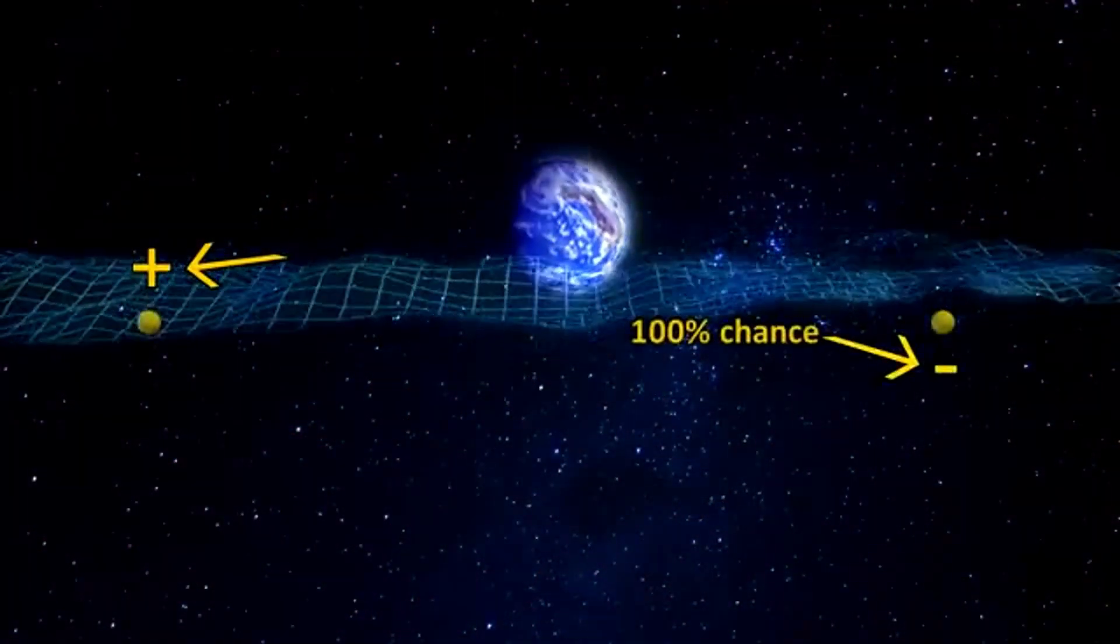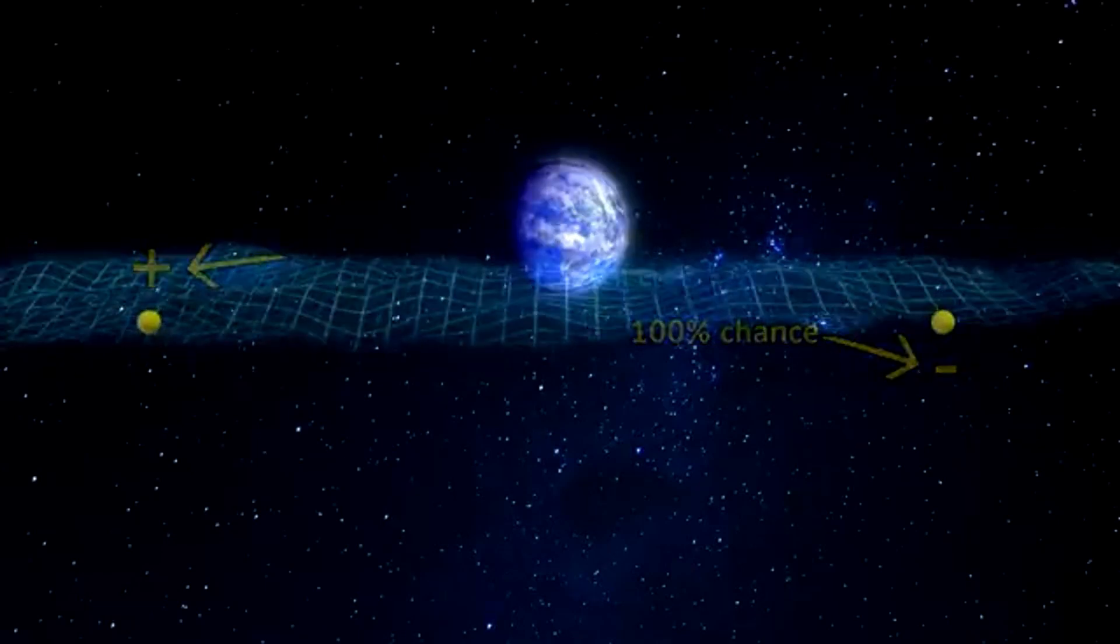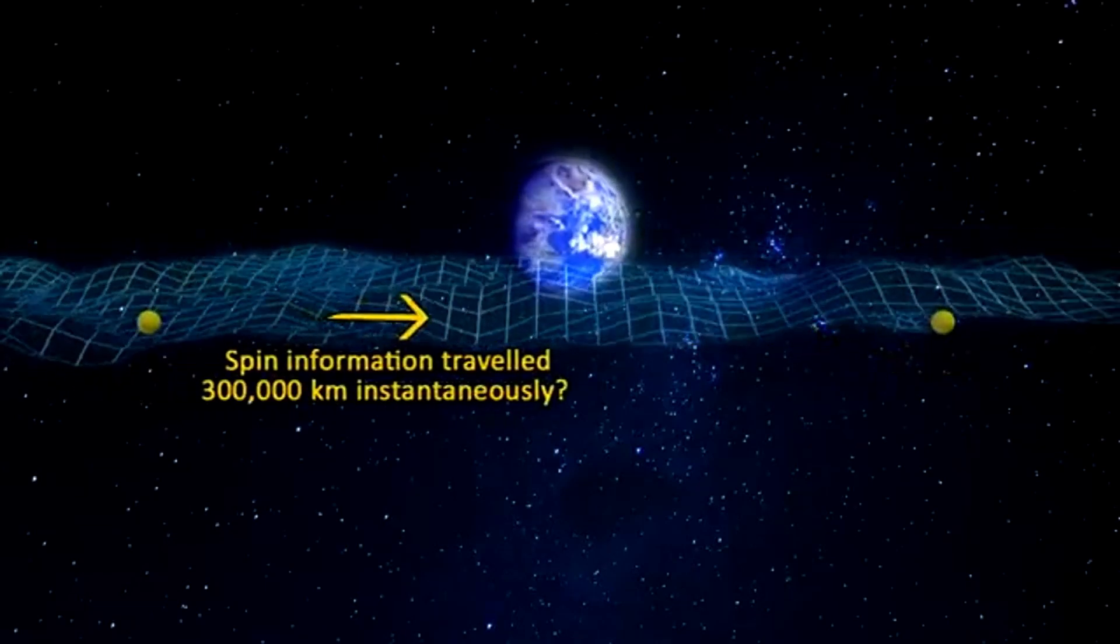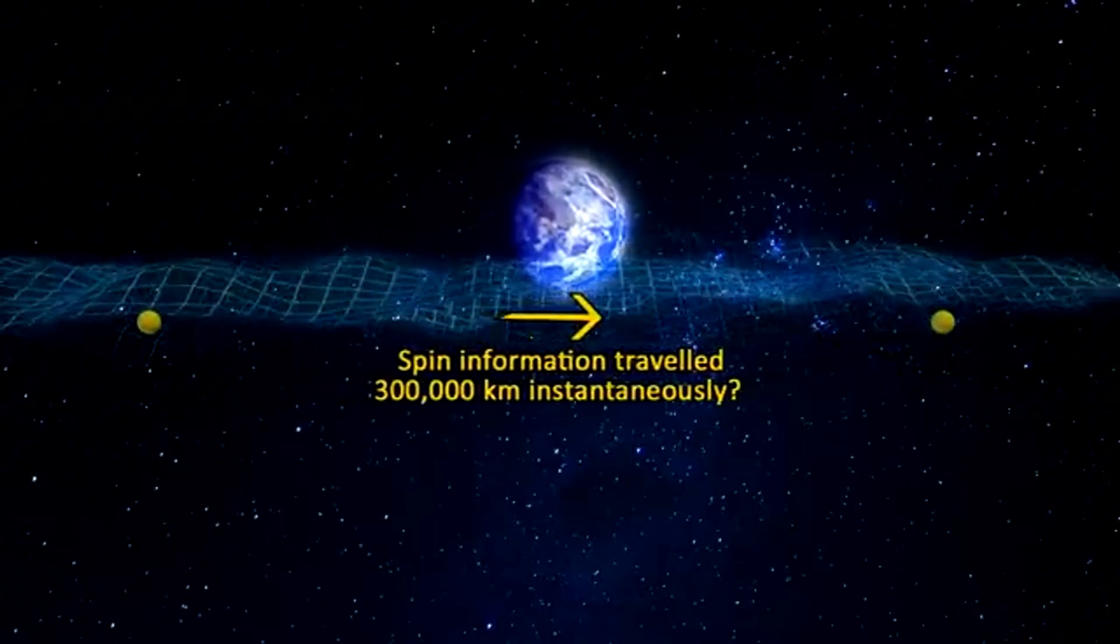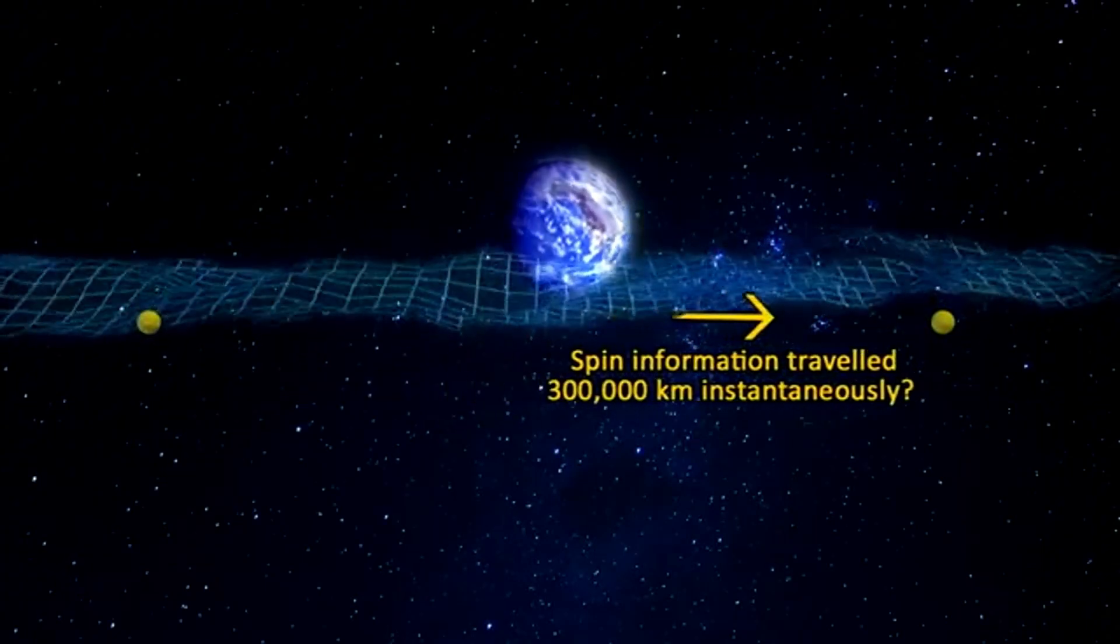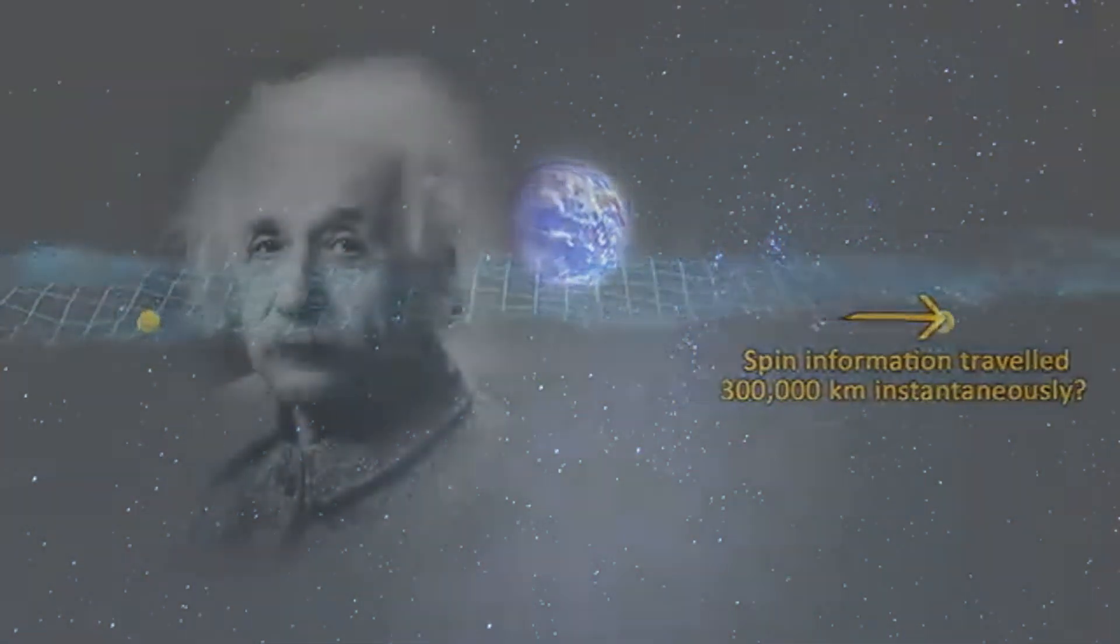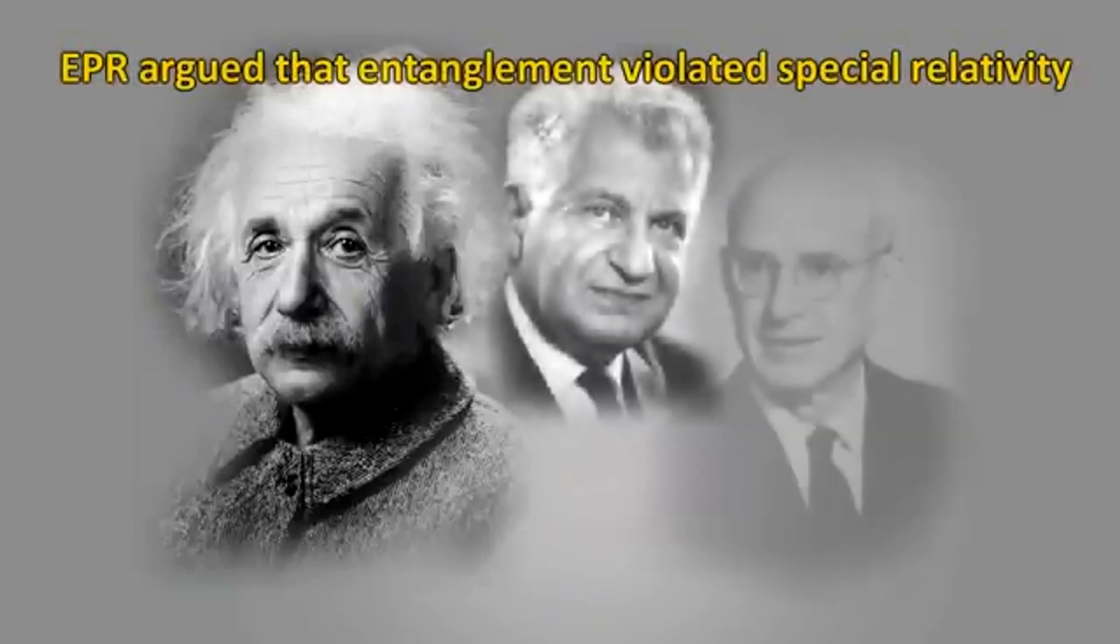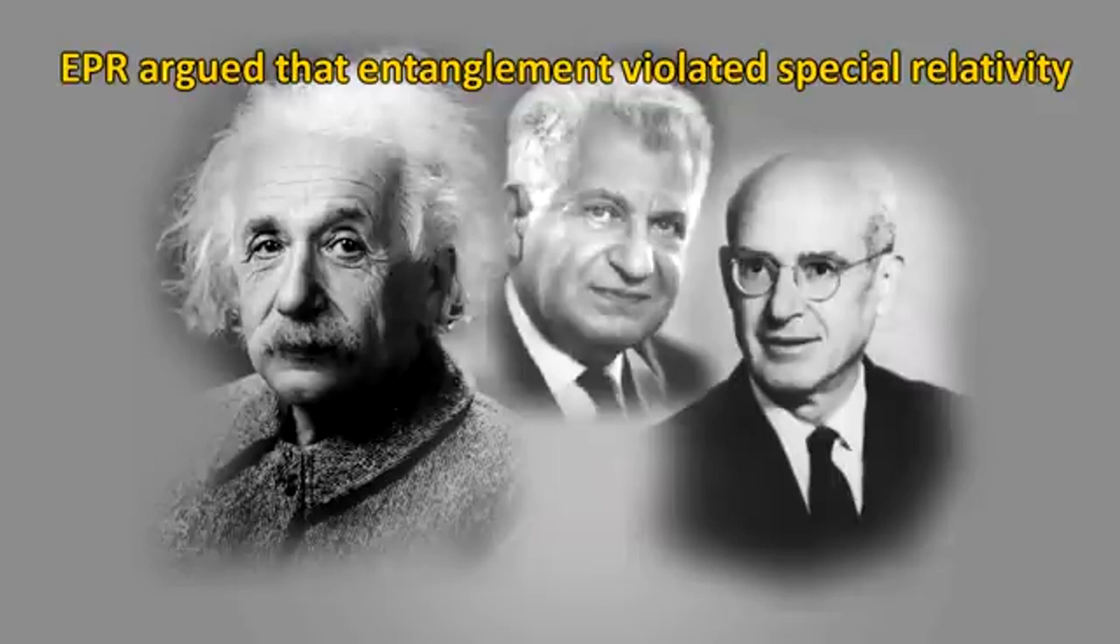For decades, the scientific world was caught in a fierce debate. Einstein's EPR paradox had cast doubt on quantum mechanics, raising a question that hung heavy over physics. Was this theory incomplete, missing some hidden variable? Or was it pulling back the curtain on a reality far stranger than anyone imagined?